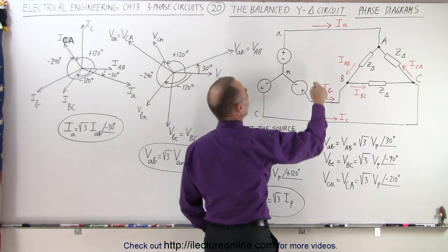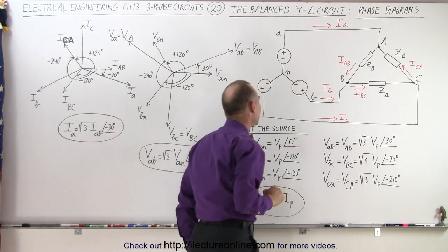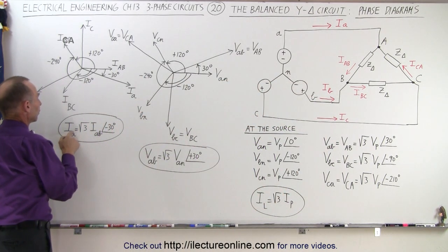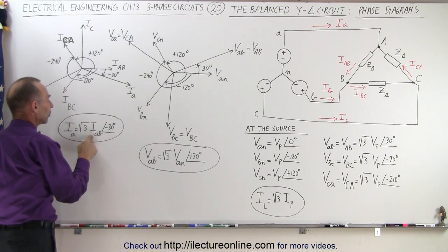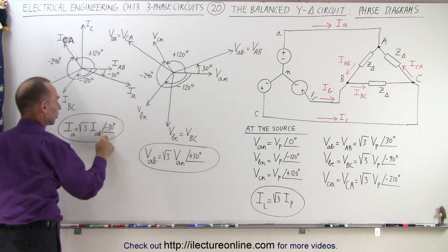And the line currents are the currents from the source to the load: IA, IB, and IC. We can see that the magnitude of the line currents is equal to the square root of three times the magnitude of the phase currents, but the line currents lag the phase currents by 30 degrees.